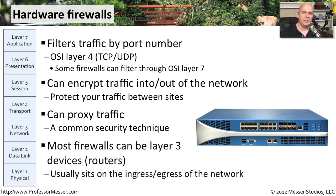It's very common to have our router be a layer 3 device on the network. It has IP addresses and it's going to route traffic for us. We put this on the edge of our network, and every time we have traffic that goes to the internet and traffic that comes back, our firewall is also going to route that for us.